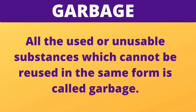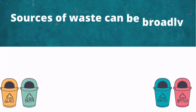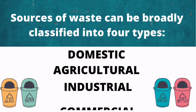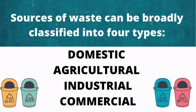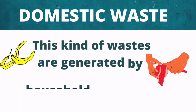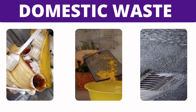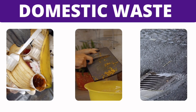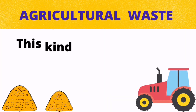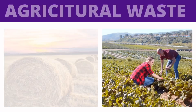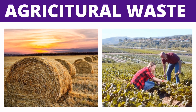Any item or material which is of no use and worthless is called waste. All used or unusable substances which cannot be reused in the same form are called garbage. Sources of garbage are broadly divided into four types: domestic, agricultural, industrial, and commercial. Waste collected by different household activities is called domestic waste — like leftover food, vegetable and fruit peels, sewage, clothing items, and plastic items.